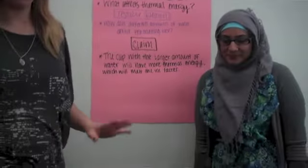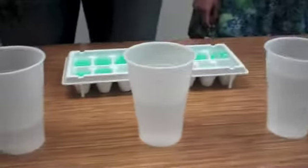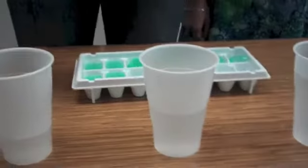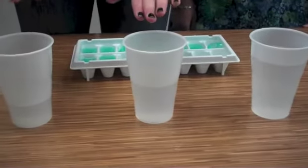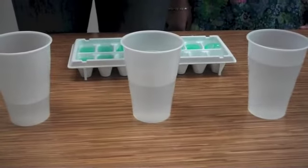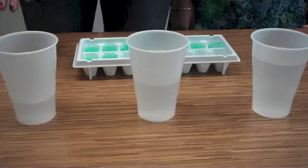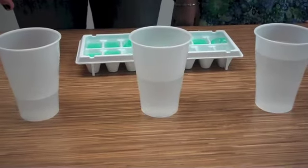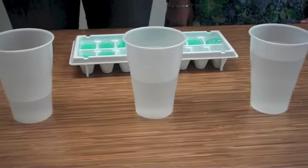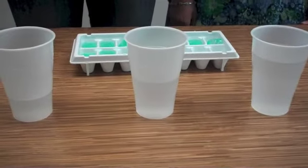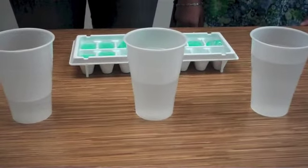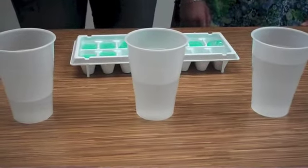We have three different cups with different amounts of water. This one has the lowest, this one is the middle, and this one has the most amount of water. We're going to put an ice cube in each one for 30 seconds and see which one melts the fastest.